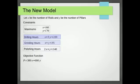So now we have our new model. And we have a new model because we can increase the number of drilling hours, the number of grinding hours. So you can notice that the constant side of the drilling hours has actually gone up by 10. But if you remember,